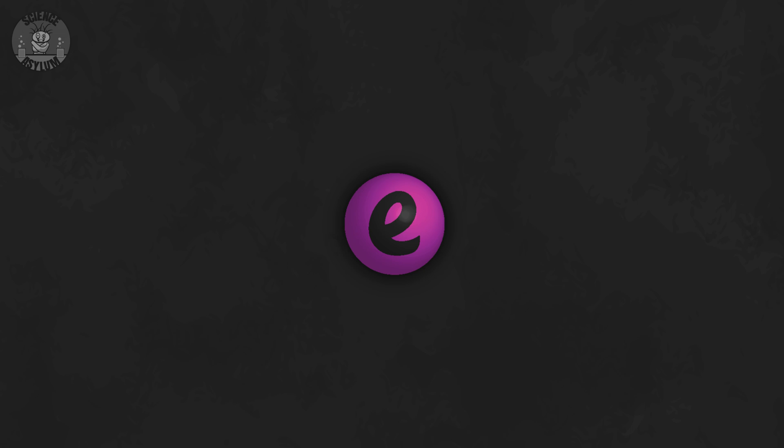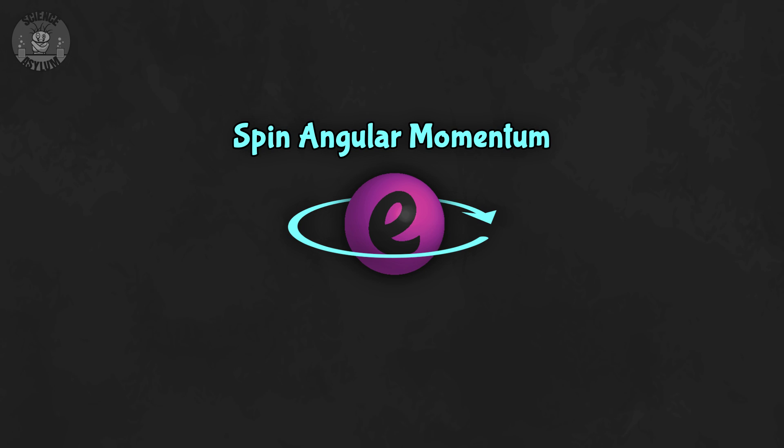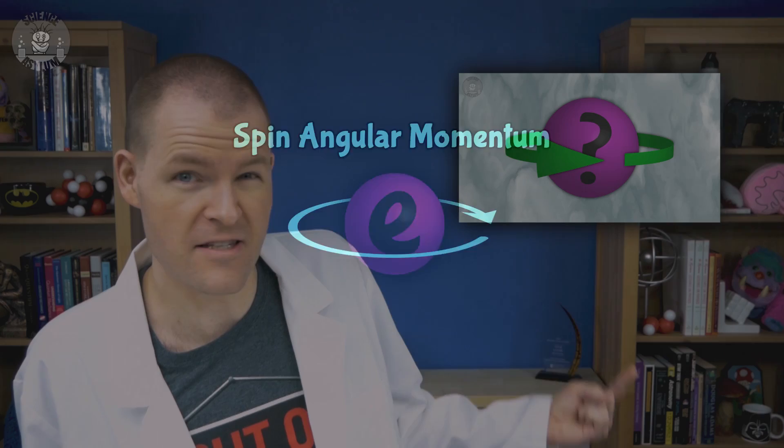This single electron has an inherent property called spin angular momentum. That's something we talked a lot about in this video. It's not really a motion, but it is momentum and that's enough for magnetism.